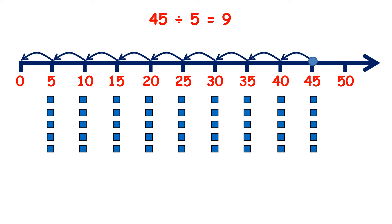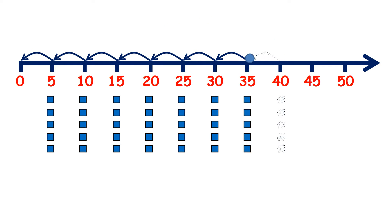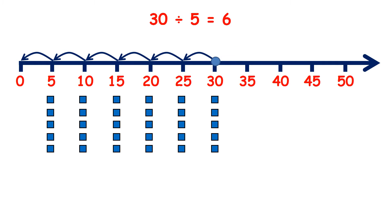45 divided by 5 is 9. 40 divided by 5 is 8. 35 divided by 5 is 7. 30 divided by 5 is 6. 25 divided by 5 is 5.